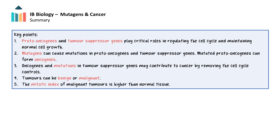The following were covered in this video: Proto-oncogenes and tumour suppressor genes play critical roles in regulating the cell cycle and maintaining normal cell growth. Mutagens can cause mutations in proto-oncogenes and tumour suppressor genes. Mutated proto-oncogenes can form oncogenes. Oncogenes and mutations in tumour suppressor genes may contribute to cancer by removing cell cycle controls. Tumours can be benign or malignant. The mitotic index of malignant tumours is higher than normal tissue.